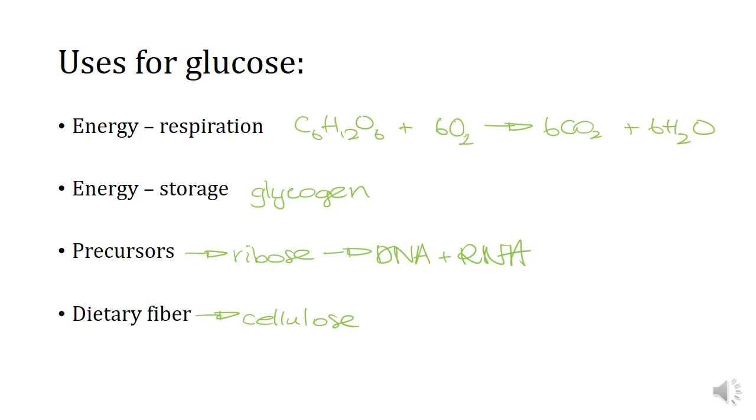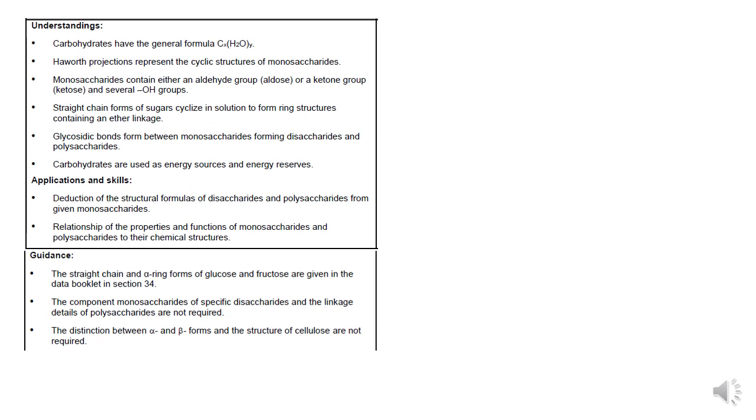Let's have a look at my next slide. So what we've got here, let's have a look through. We talked about the general formula for carbs, we talked about Haworth projections, we talked about aldose and ketoses. We talked about cyclizing, so forming those ring structures. We talked about glycosidic bonds, and we talked about energy sources and energy reserves. Deductions of structural formulae, I will actually find an IB question for that one and give it to you in class.